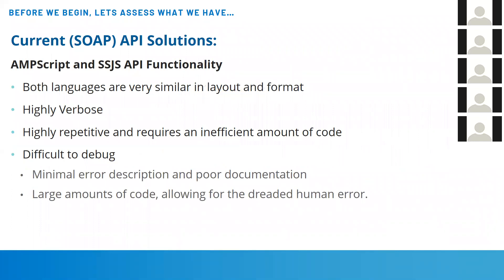Moving on to AMPscript and server-side JavaScript API scripting functionalities — both languages are strikingly similar in layout. They're almost mirror images of each other. It is very highly verbose. Instead of just going to a furniture store and asking for a table, it's like you come in with the type of wood, the original location of the tree, how it was cut, who cut it, what finish was used, and so on. That's pretty much how AMPscript and server-side JavaScript API functionality works. Plus, it's difficult to debug because there are no real error descriptions and pretty poor documentation. With the large amount of code, it's a bigger risk — going through 90 lines of AMPscript compared to four or five lines of REST API.